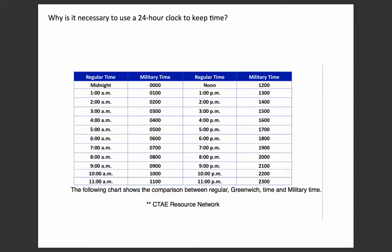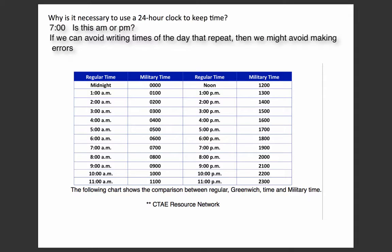In the health sciences, specifically with dosage calculations, you're going to be given this military time in 24-hour time because if we're just given something like 7:00 without the a.m. or p.m., there could be some confusion whether or not we mean a.m. or p.m. That's a 12-hour difference which could really make a significant difference in the medication and in the health of the patient if we were to supply it 12 hours off of when we were actually supposed to administer the drug. So this is why we use military time to avoid errors if a.m. and p.m. were missing.